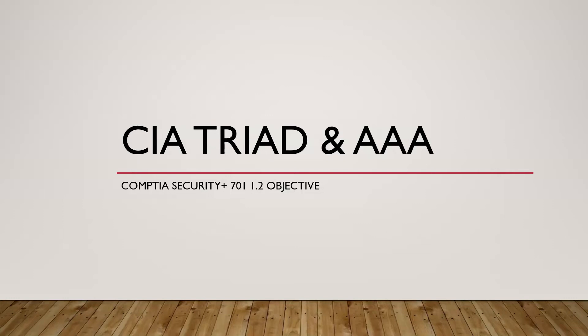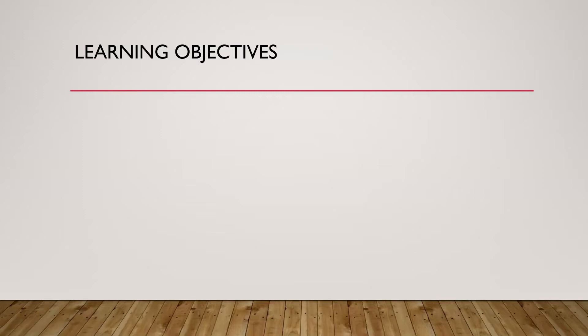Hey everyone, in this video I'm going to go over some of the concepts you need for CompTIA Security+ — the 701 version of the exam, under objective 1.2. You can look that up if you're not familiar with the exam objectives. Some of the things we're going to cover include the CIA triad, Triple A — and no, that's not the people that come fix your car — and non-repudiation, and a brief overview of gap analysis.